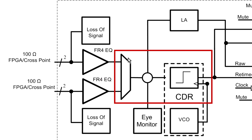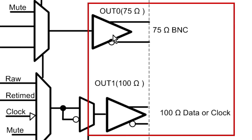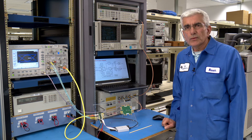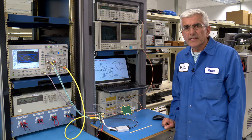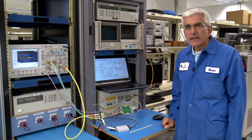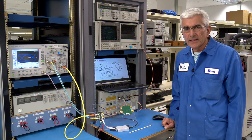After FR4 equalization there is a two-to-one mux followed by the re-clocker. In SMPTE mode, we have 75 ohm output drivers and 100 ohm differential output drivers. The 75 ohm output driver is used to drive coax, and the second 100 ohm differential driver is used either for re-timed data, recovered clock, raw data, or mute. In 10 gig mode, the first output is powered down and the second output is used for re-timed 10.3125 gigabits ethernet data rate.